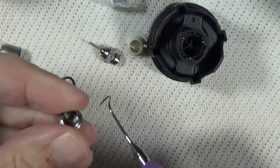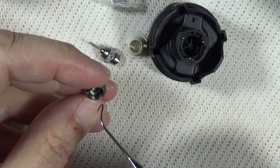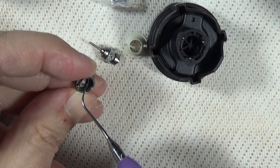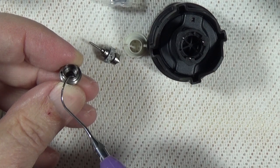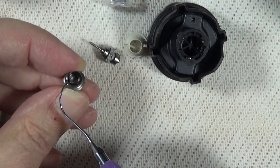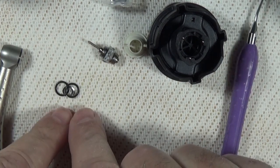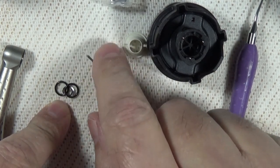And then we've got one more o-ring in the back cap. Again, it sets in a little groove. Just hook it, push it towards the middle, and lift it out.